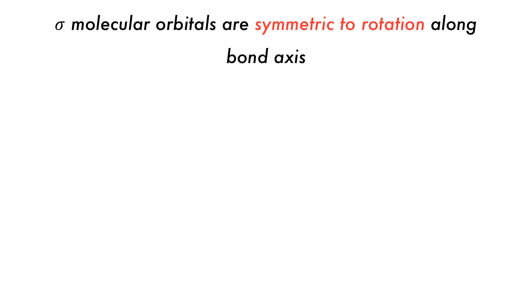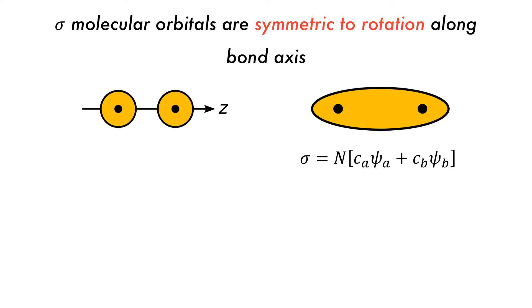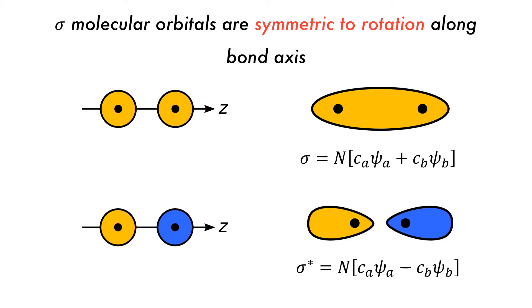Why are some interactions called sigma and some pi? Sigma interactions are symmetric towards rotation along the bonding axis. If there are two in-phase s orbitals, they will overlap to form a sigma bonding molecular orbital, where N is a normalization factor. If the two s orbitals are out of phase, the overlap will be destabilizing, giving a sigma-star antibonding orbital. If these orbitals are rotated around the z-axis, they will not change, confirming that they are sigma orbitals.